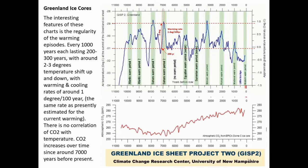Greenland ice cores. The interesting features of these charts is the regularity of the warming episodes — every 1,000 years, each lasting 200 to 300 years, with around 2 to 3 degrees temperature shift up and down. With warming and cooling rates of around 1 degree per 100 years — the same rate presently estimated for the current warming — there is no correlation of CO2 with temperature, and CO2 increases over time since around 7,000 years before present.